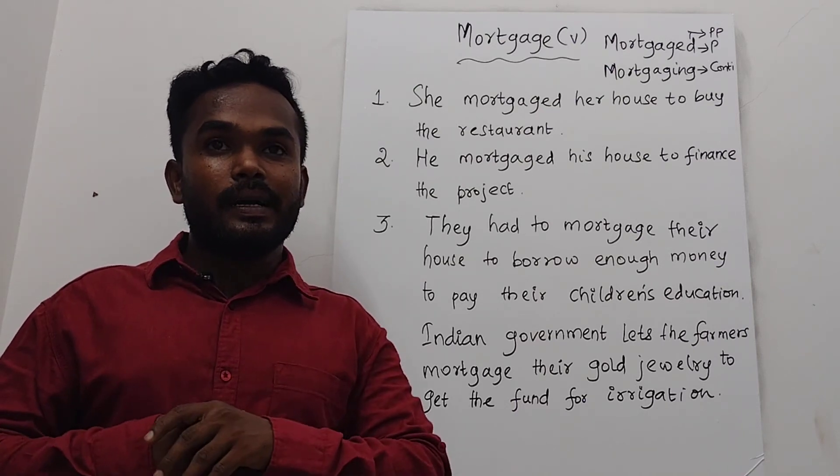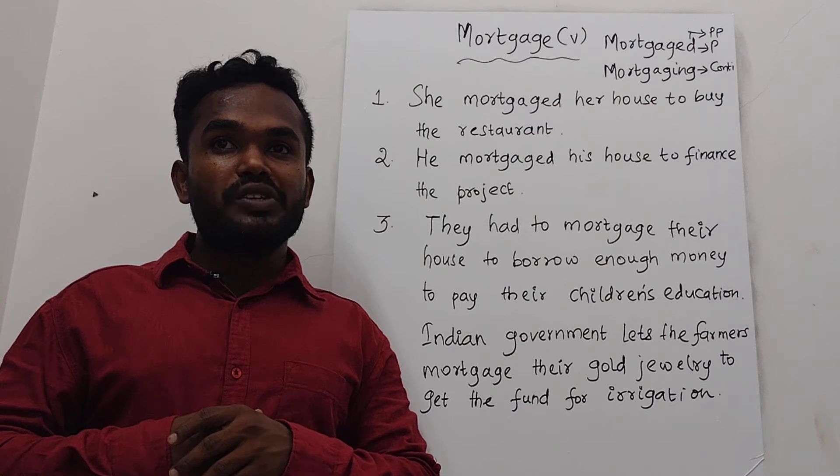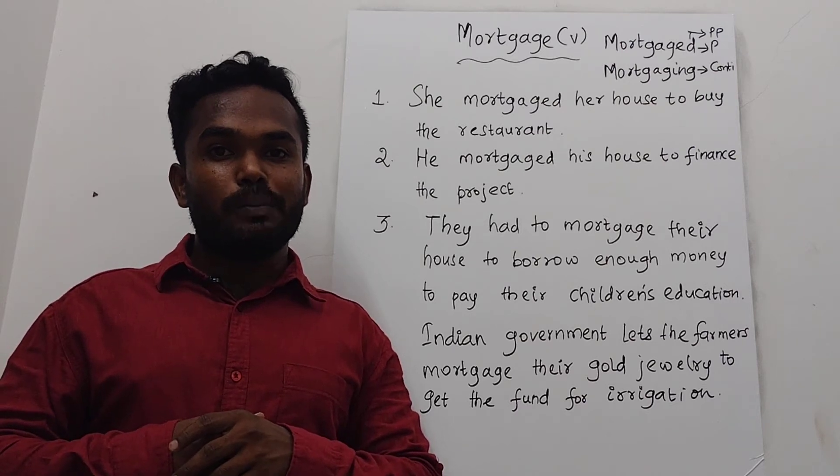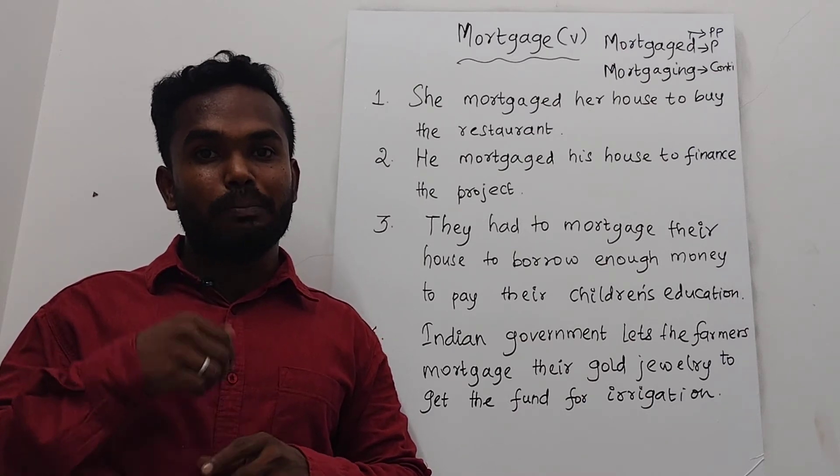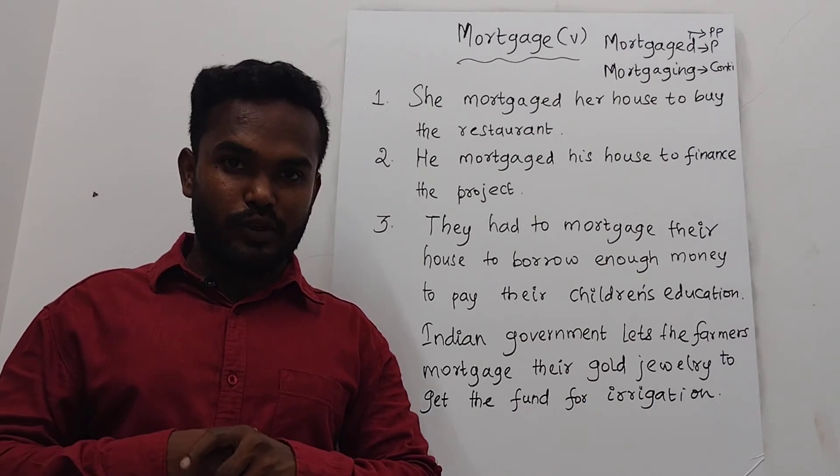The first sentence is: she mortgaged her house to buy a restaurant.